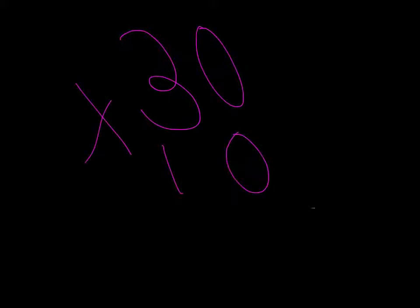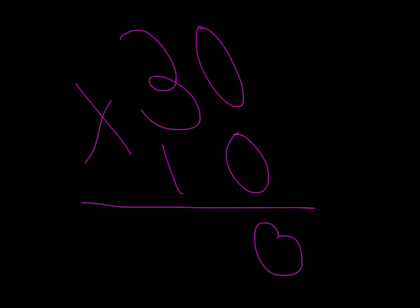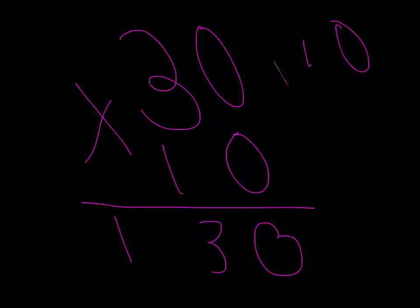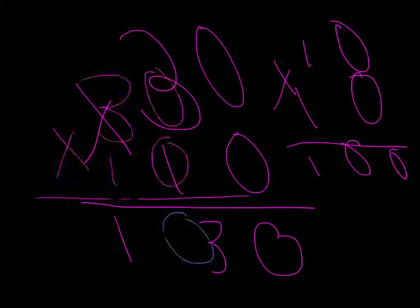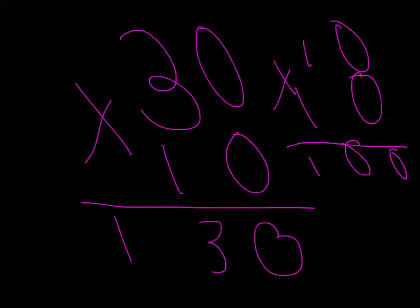10 times 10 is an easy one. So 0 and 3, 1. Easy. Now, 10 times 10: 1, 0, 0. There we go.